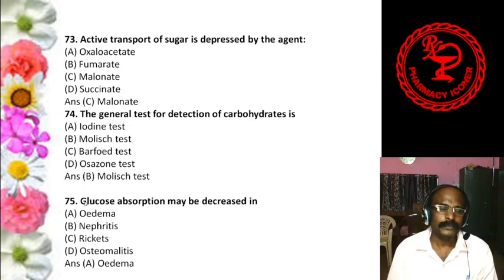Question 58: An L-isomer of monosaccharide formed in the human body is — L-fructose, L-erythrose, L-xylose, or L-xylulose. The answer is L-xylulose. Question 59: Hyaluronic acid is found in — Joints, Brain, Abdomen, or Mouth. The answer is A, joints — hyaluronic acid acts as a lubricant in the joints.